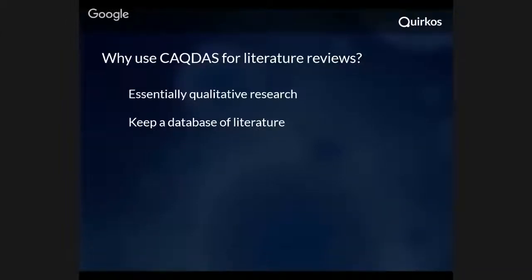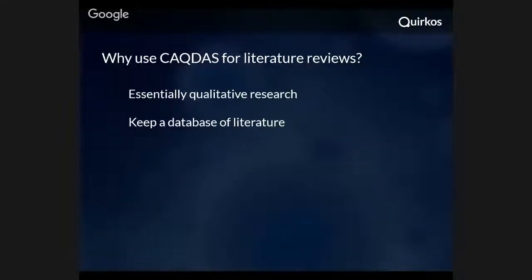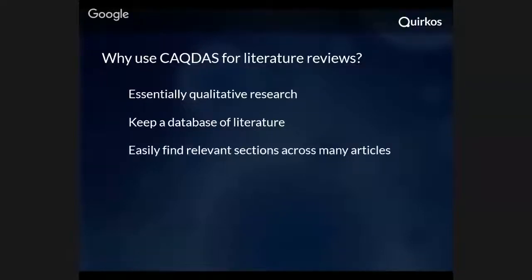And of course this is essentially qualitative research that you're doing when doing a literature or systematic review. You're examining a source of text qualitatively, deciding what it's about, which bits are relevant to you — very common actions for doing qualitative analysis. So any software geared up for qualitative analysis usually works pretty well to do literature reviews, and all the advantages this kind of software has for working with qualitative text applies for journal articles or grey literature.